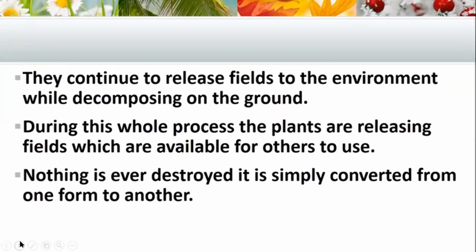As we said, when things decompose — so your leaves decomposing — it's just a release of fields to the environment. During this whole stage, during the autumn period, the plants are releasing fields which are available for others to use. So nothing is ever destroyed — it is simply converted from one form to another. This release of energy is available for others to use. We as human beings will absorb that energy as well. That's why autumn gives different feelings to people. There is always tremendous beauty in autumn time with the different colors, and so we understand that we absorb these fields. Even as the plants' leaves are slowly dying, they are feeding us with this tremendous energy and other creatures out there as well — it's just a transfer from one form to another of this energy.